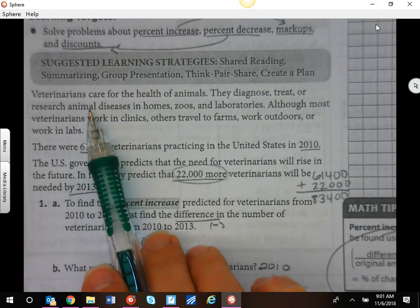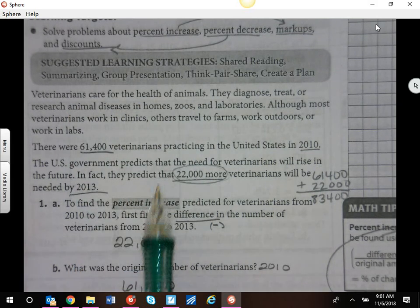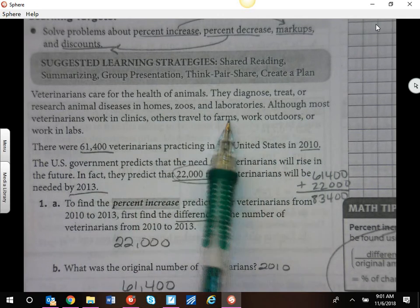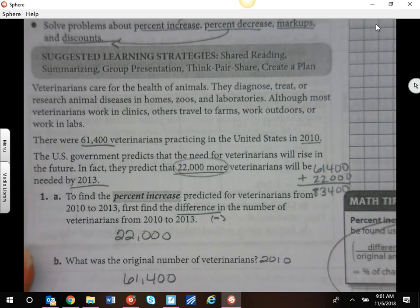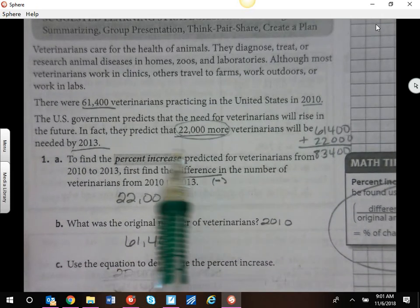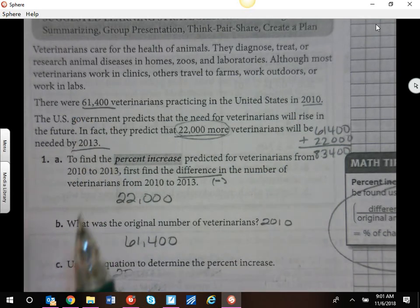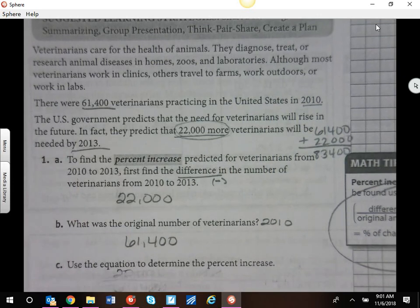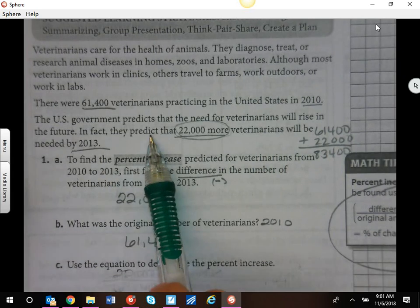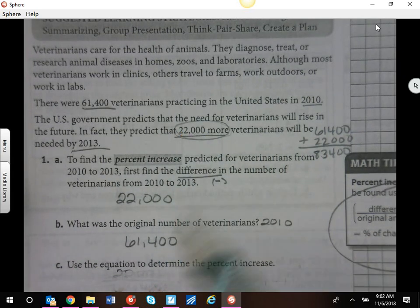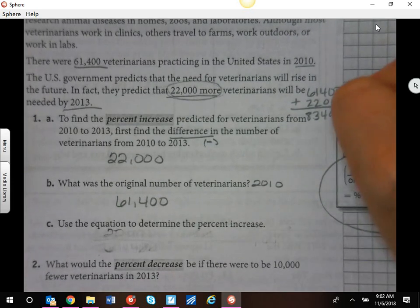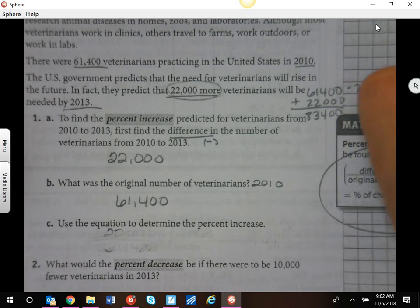This particular example is about vets. Vets care for the health of animals at home, zoos, labs, clinics, or farms. In 2010, the U.S. had 61,400 vets, and the government is predicting that we will need more vets in 2013. In fact, they predict we'll need 22,000 more. So if we take that 61,400 plus the 22,000, in 2013 they're saying we will have 83,400 veterinarians.